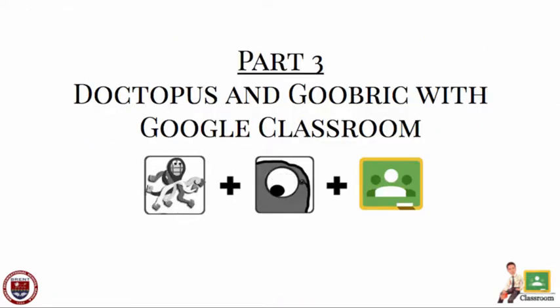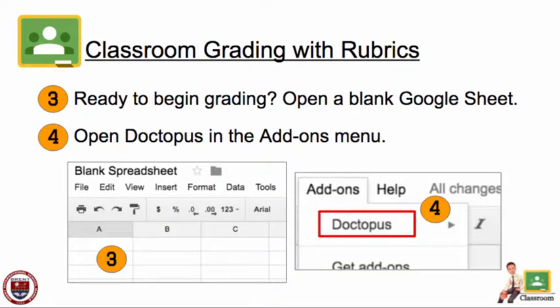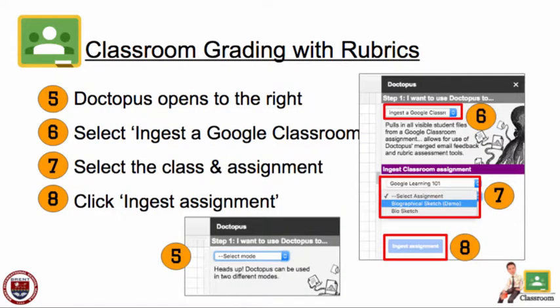The third part is using Doctopus and Goobric together with Google Classroom. The first thing you'll need to do is create an assignment in Google Classroom as usual. Make sure that you make a copy of the assignment for each student. When you're ready to begin grading, create a new blank Google Sheet and open up Doctopus from the Add-ons menu. Once you have selected the proper mode, which is Google Classroom, Doctopus will open to the right.